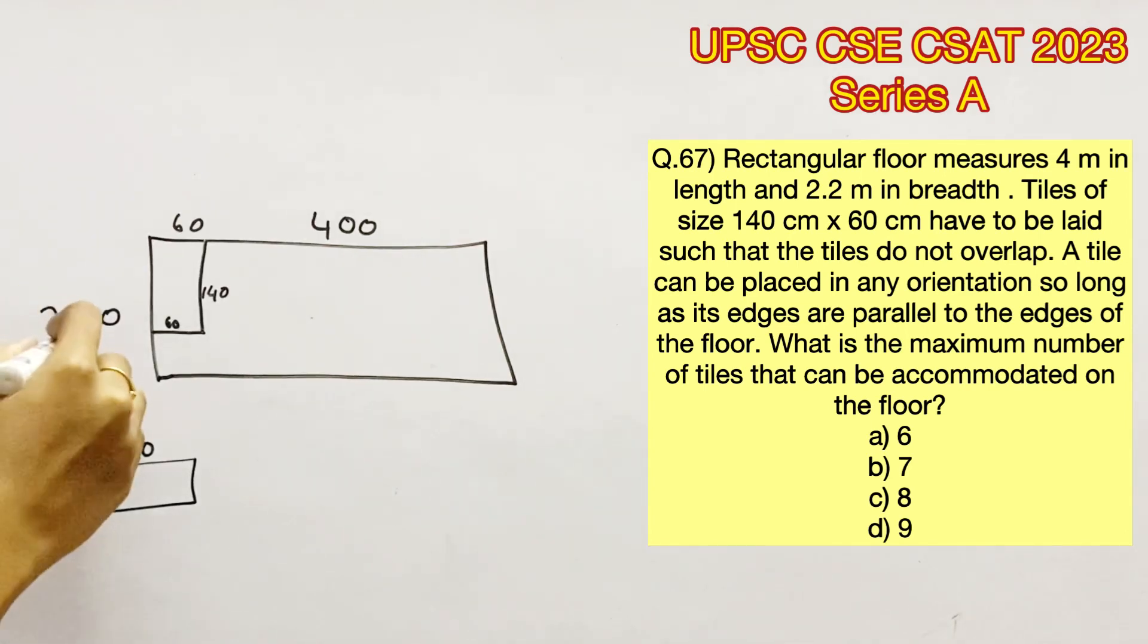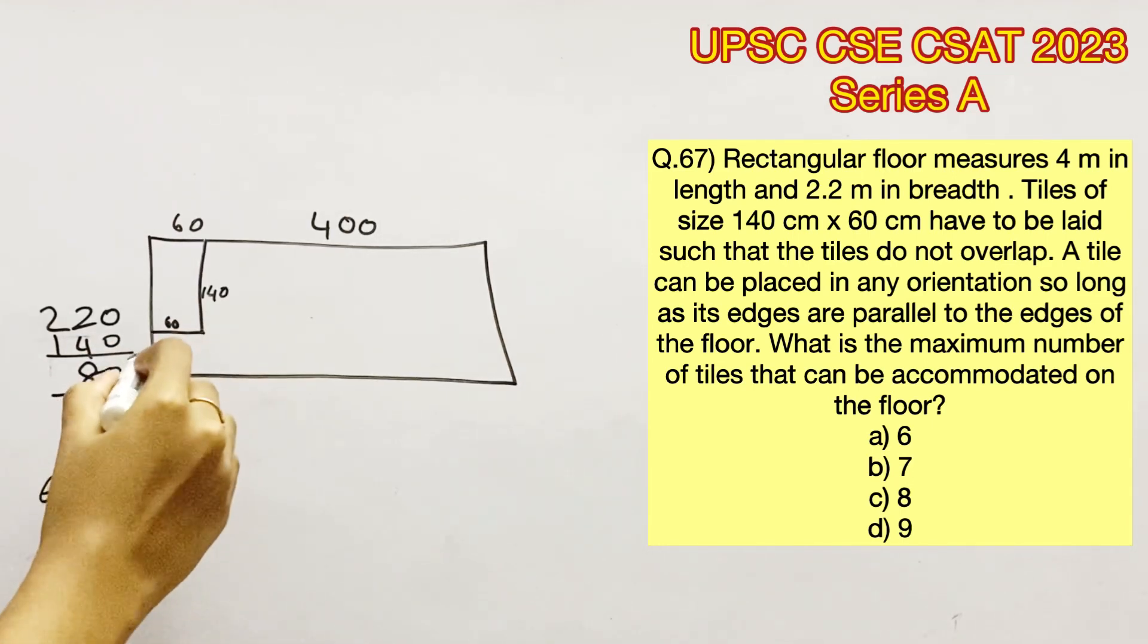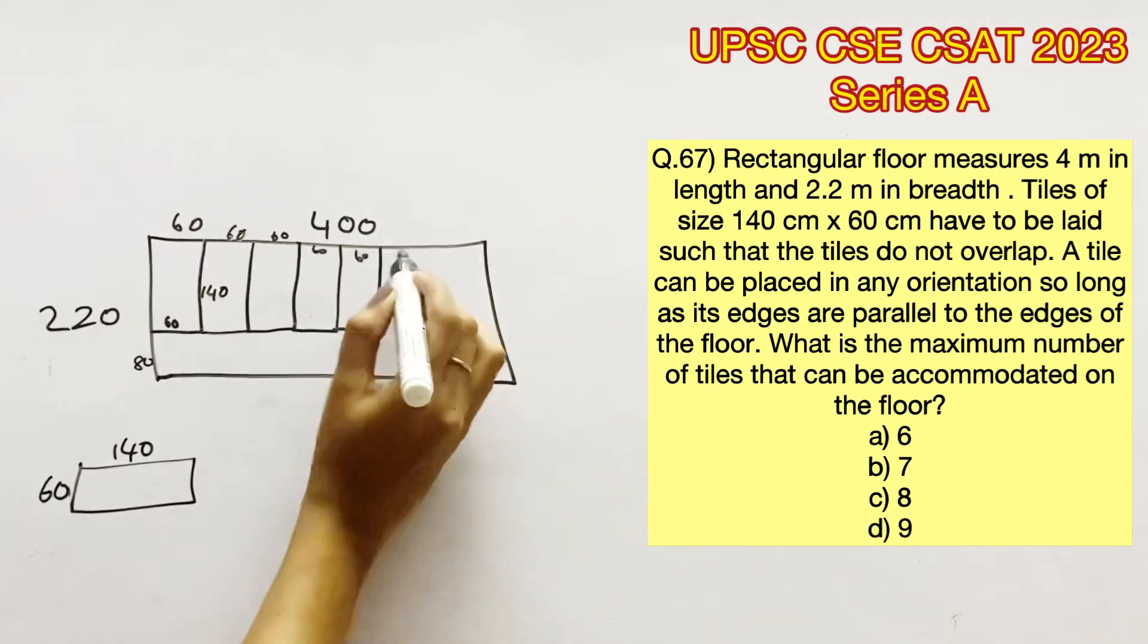Now the breadth 220 is being filled up by the length of the tile that is 140. So the remaining portion here will be 80. Now we can keep adding these tiles adjacent to each other.